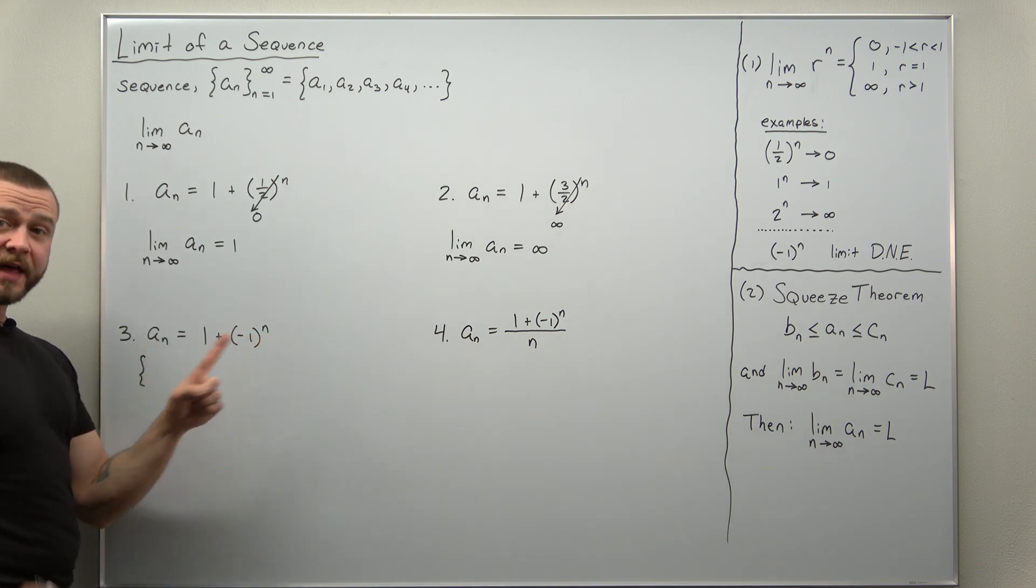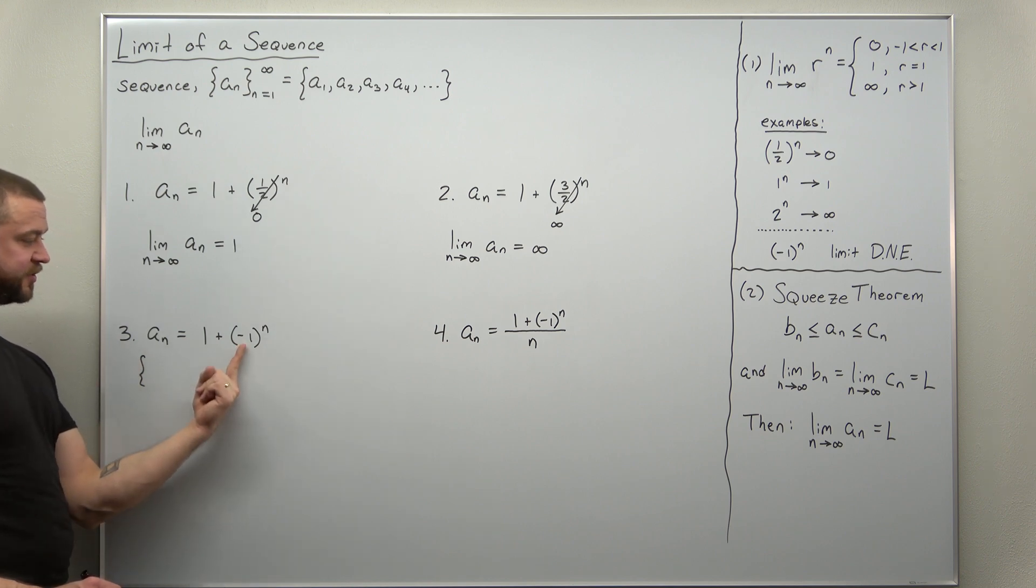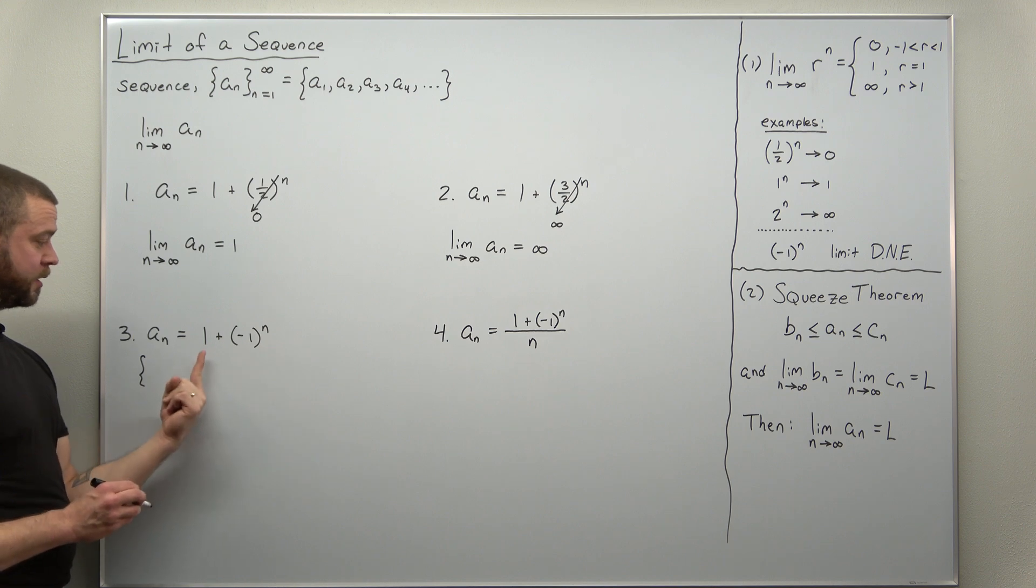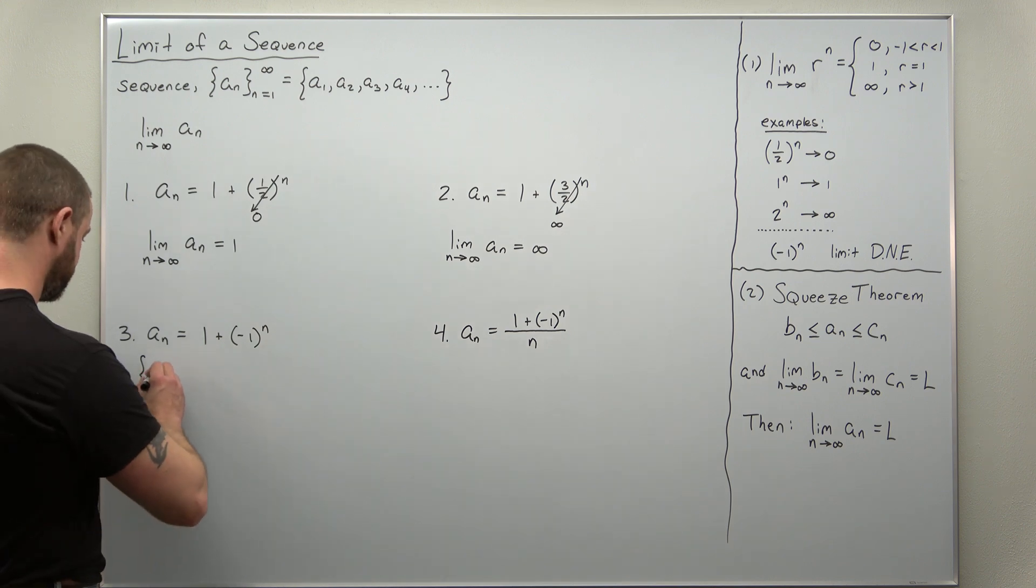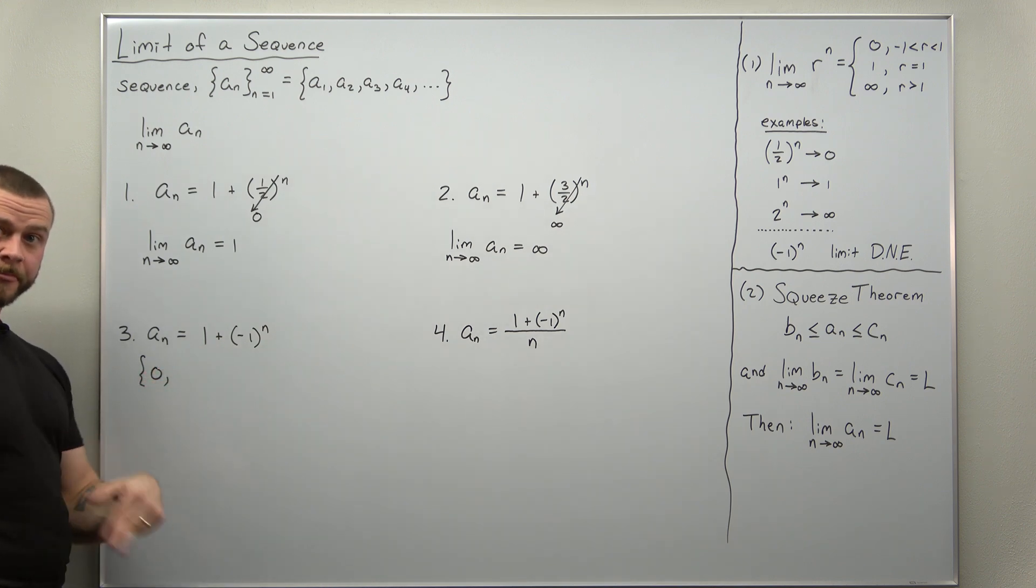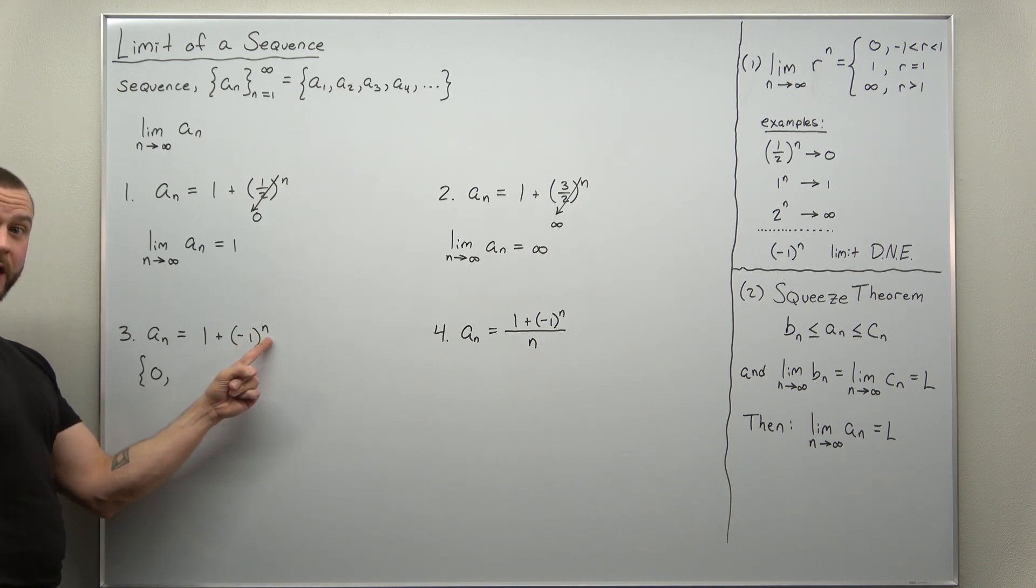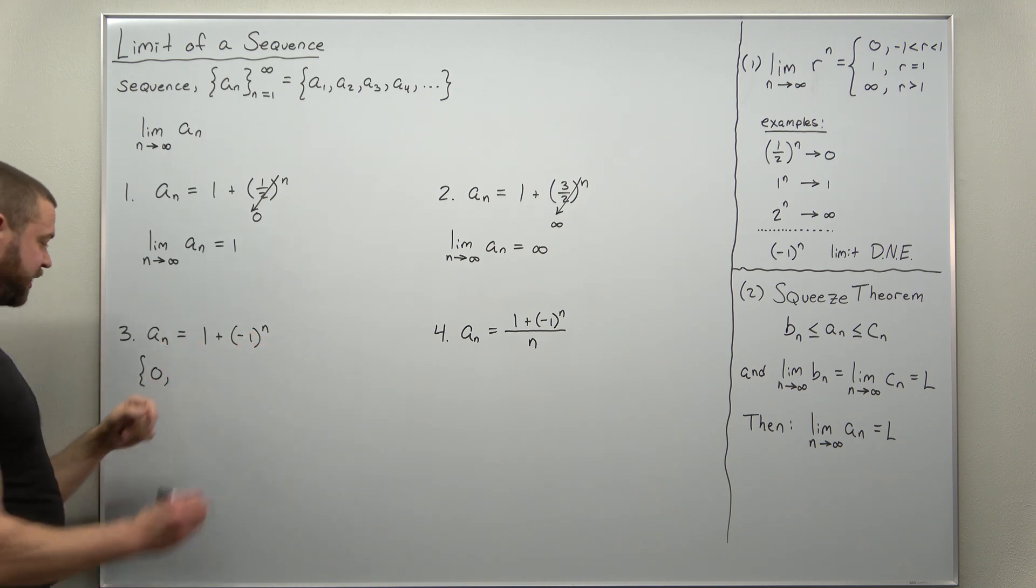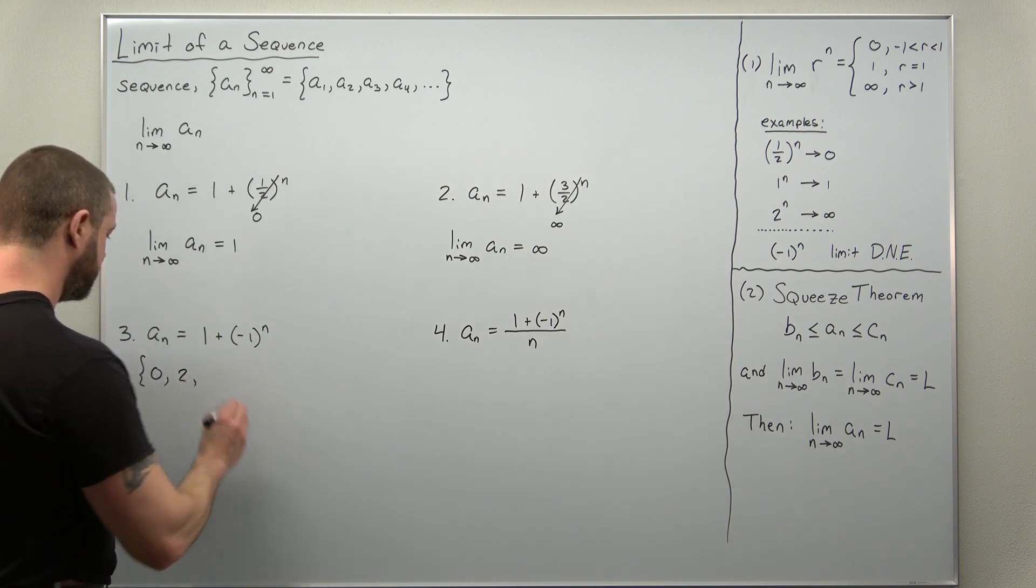So start with n equals one. This is negative one to the first power, negative one plus one. We'll get zero. Now go to n equals two, negative one squared, positive one plus one, we'll get two.